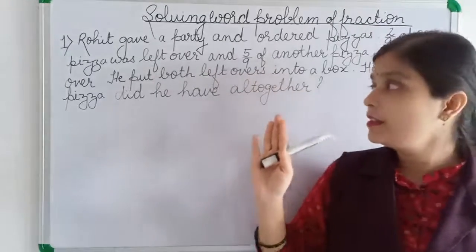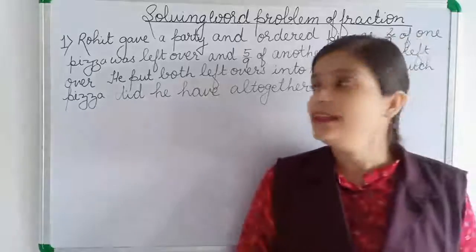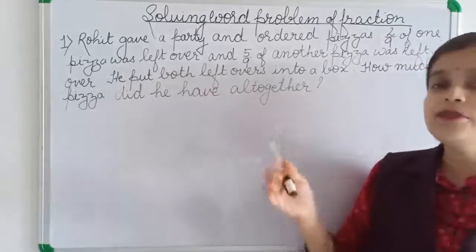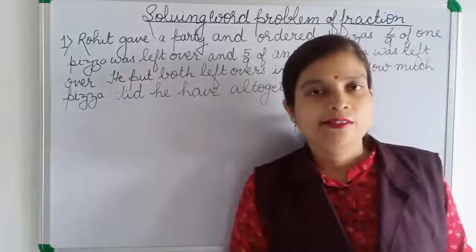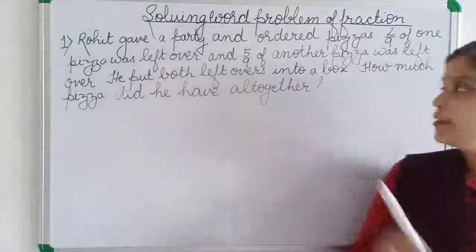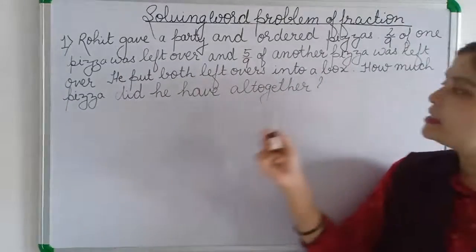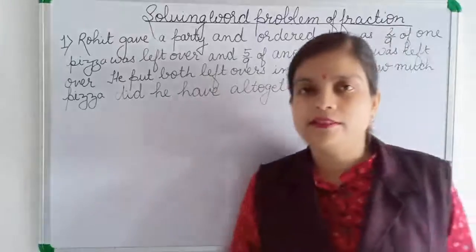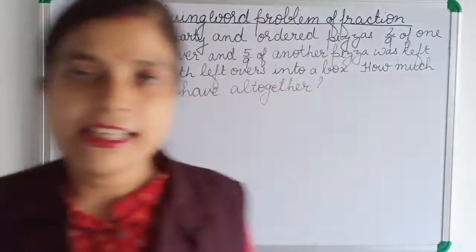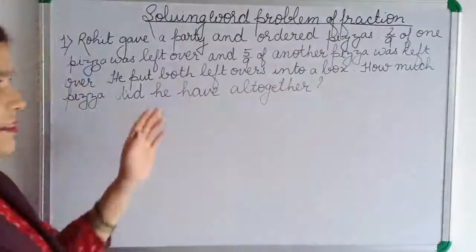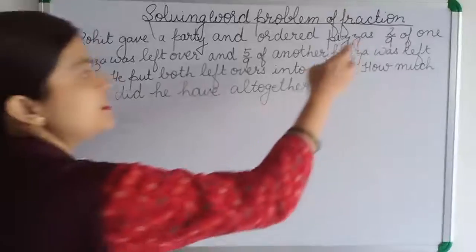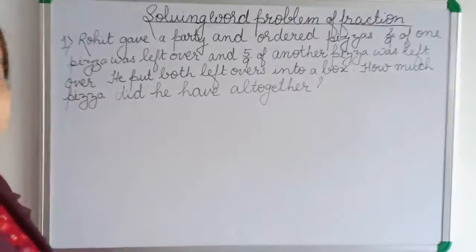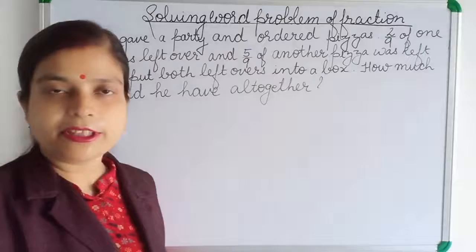Rohit put both the leftover pizzas into a box. Now we have to calculate how much pizza he had altogether — that is, two by nine and five by nine — so we need to add them.